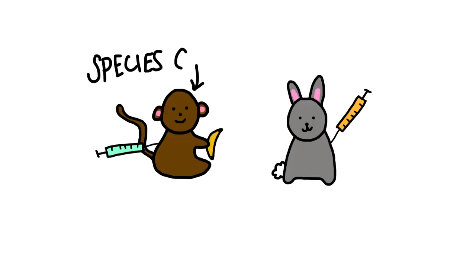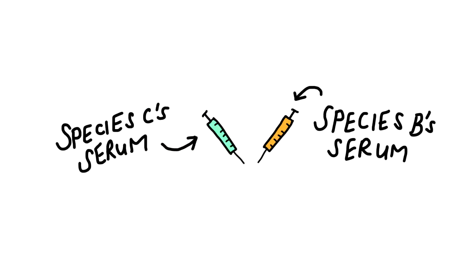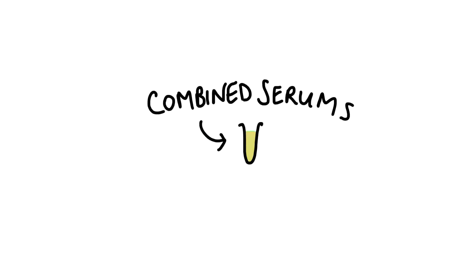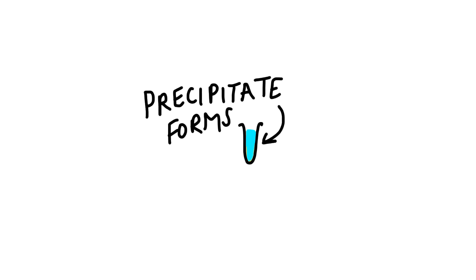Serum is also extracted from a third species, species C, and it is combined with the serum of species B. If species B's antibodies complement and attach to species C's antigens, then a precipitate is formed.